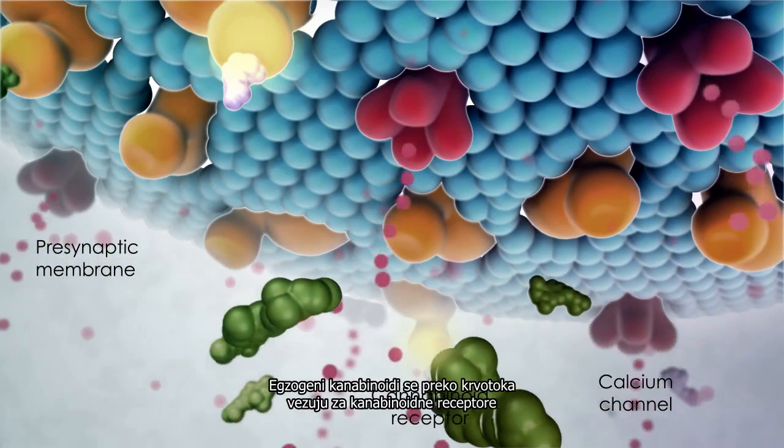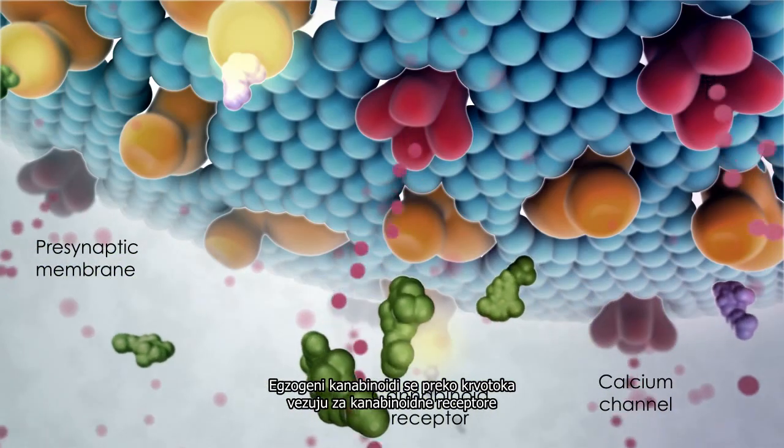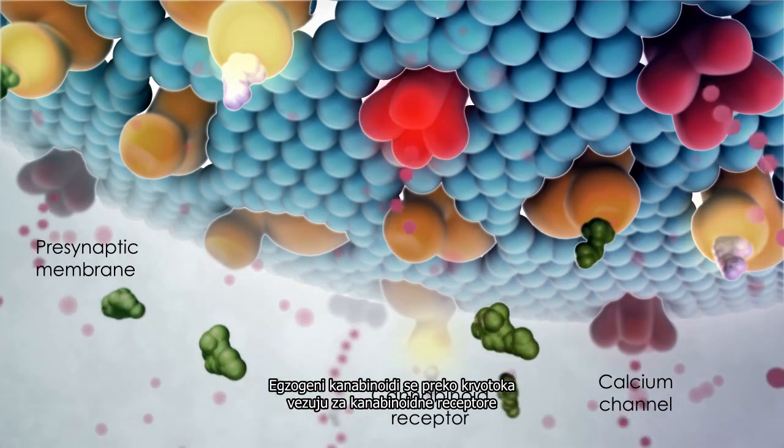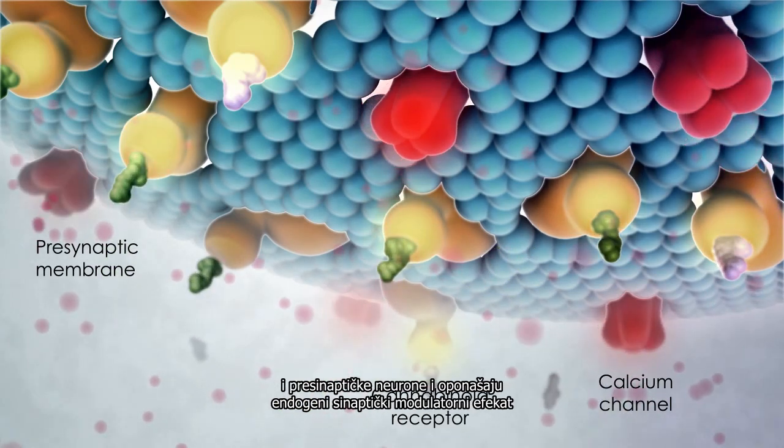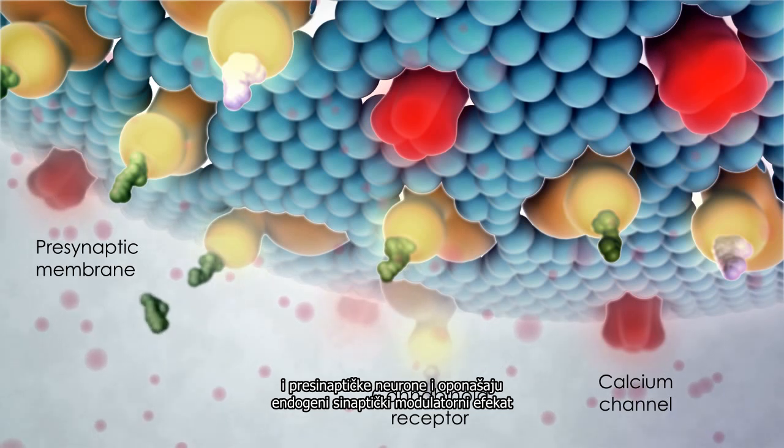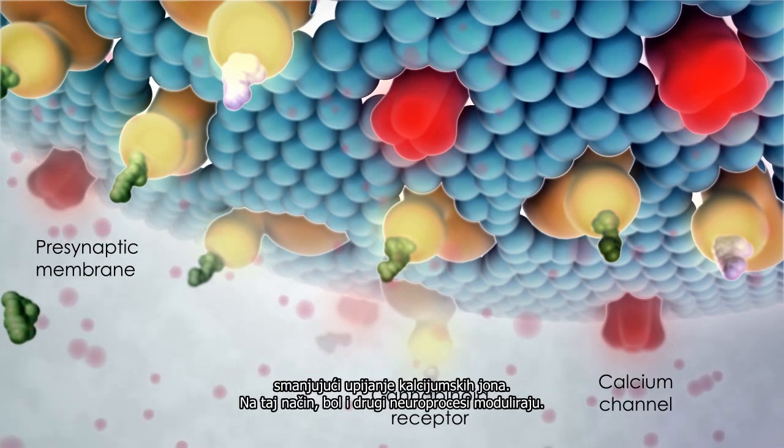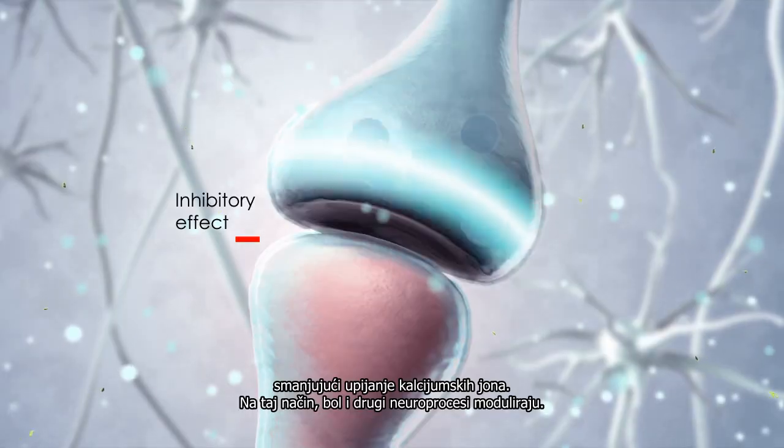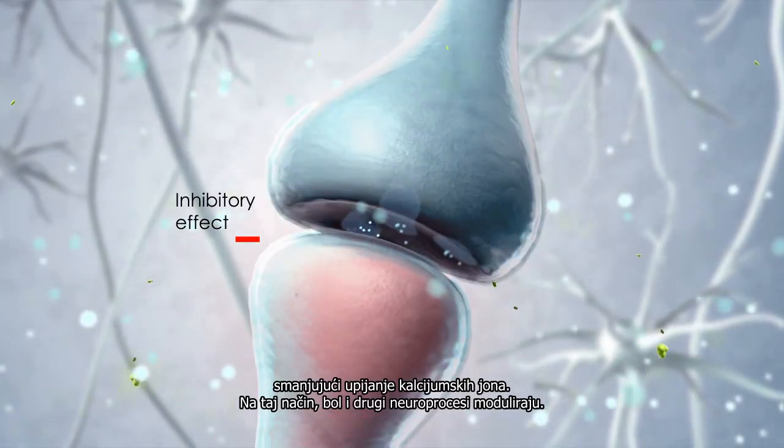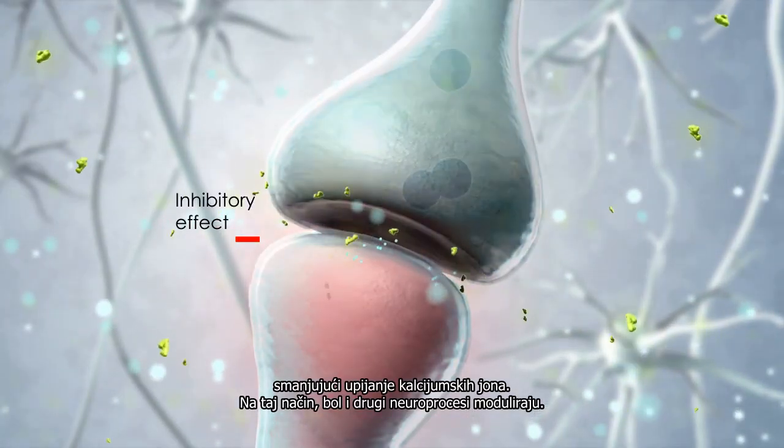Exogenous cannabinoids from the bloodstream bind to cannabinoid receptors on the presynaptic neuron and mimic the endogenous synaptic modulatory effect by decreasing influx of calcium ions. In this way, pain and other neural processes are modulated.